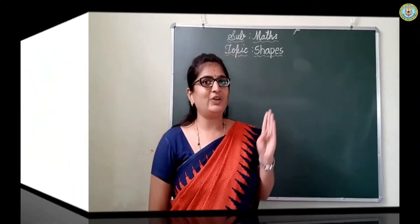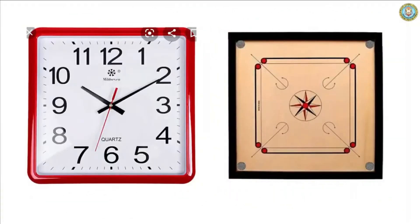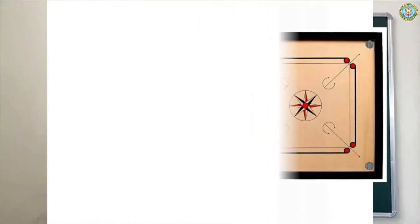Okay, look at the screen. Some examples of square are: Karam board and some wall clocks.